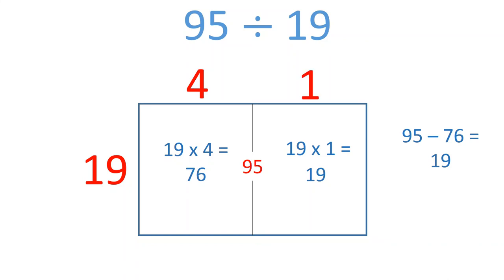When I add the two sections of the length together, I get a total length of 5. 95 divided by 19 equals 5. I hope that makes more sense.